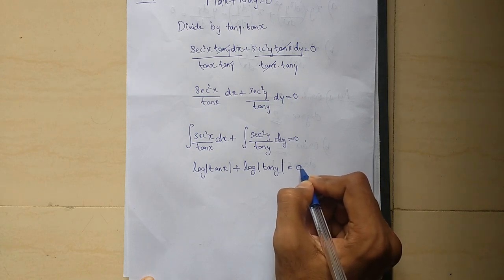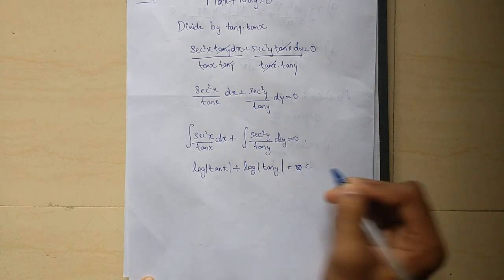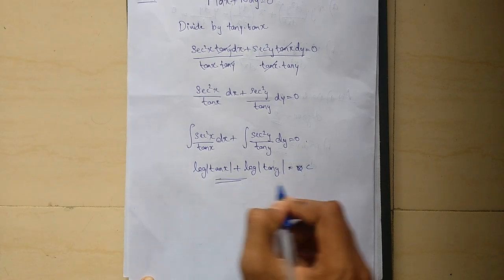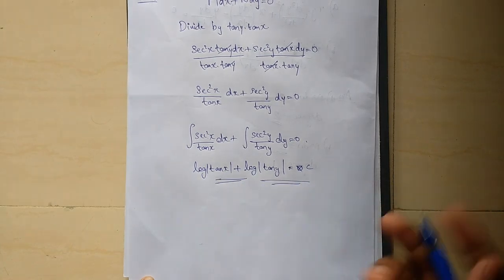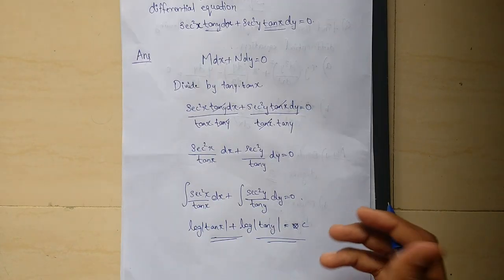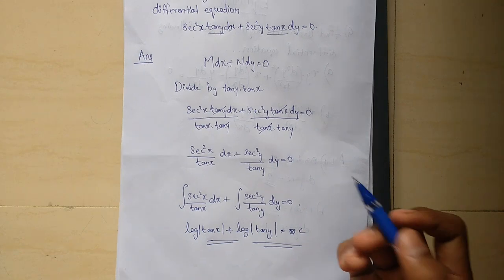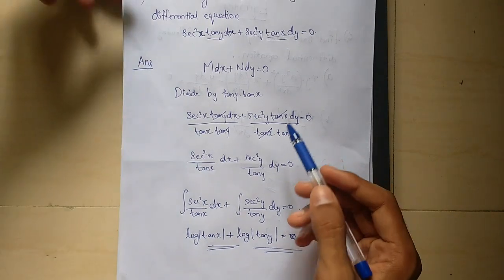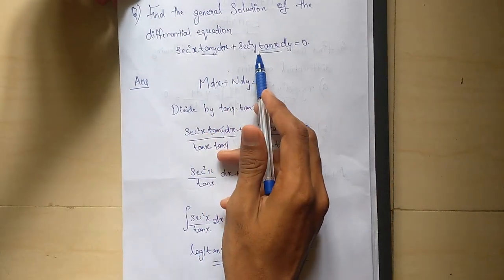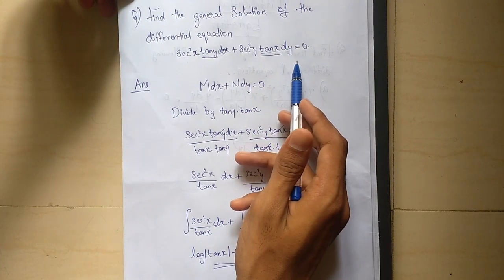Log tan x plus log tan y equals 0 with constant c. Friends, I asked you to solve this question. The equation is cosec squared x times tan y dx plus cosec squared y times tan x dy equals 0. I asked you to find the general solution.